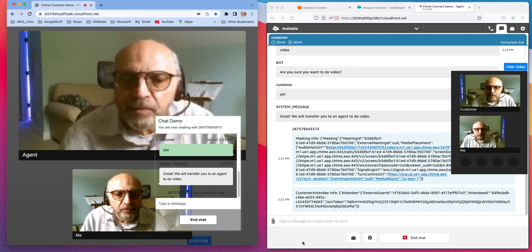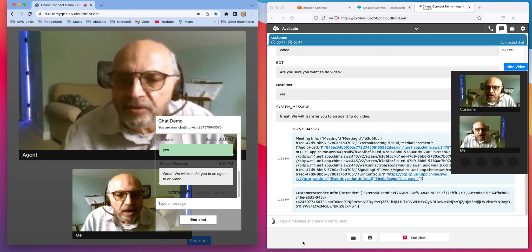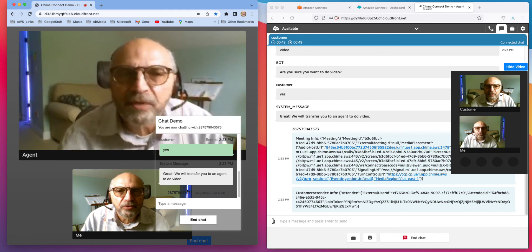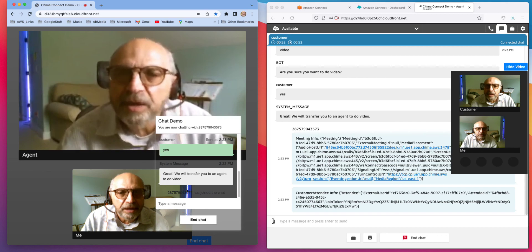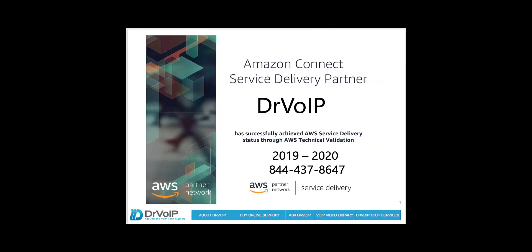So if you find this interesting, let's talk about how we can add this to your Amazon Connect contact center. Once again, drvoip.com — hit us up with an email at drvoip@drvoip.com, or give us a call at 844-437-8647. We'd love to help you work through the vision for your Amazon Connect contact center. I hope you have found this informative — thank you for viewing.